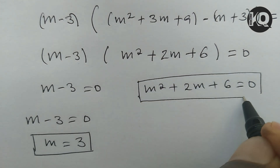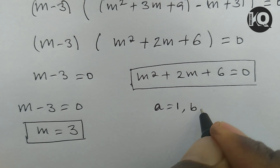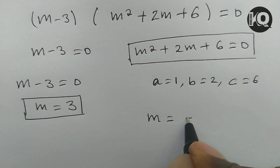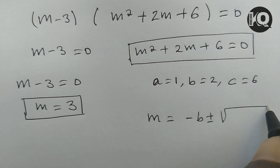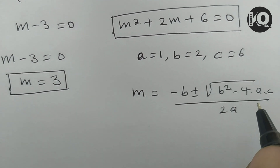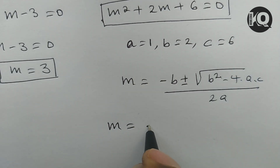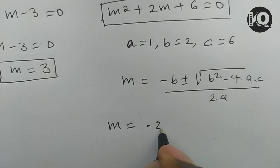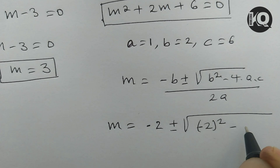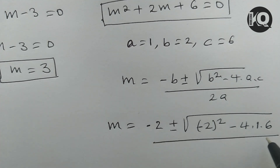The second factor m squared plus 2m plus 6 is a quadratic equation, which we solve using the quadratic formula. The coefficients are: a equals 1, b equals 2, c equals 6. So m equals negative b, which is minus 2, plus or minus the square root of b squared minus 4ac, that is minus 2 squared minus 4 times 1 times 6, divided by 2 times 1.